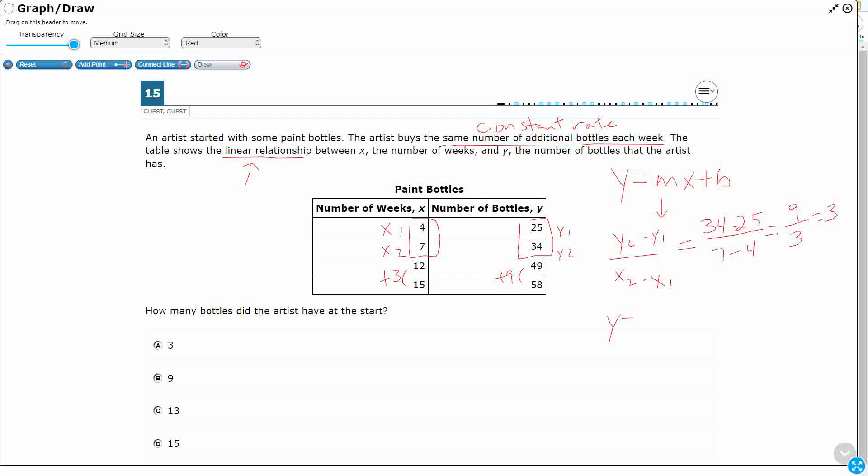So y equals 3x plus b. Now, to solve for the b, that's the starting point. Because maybe the artist didn't start at 0. Maybe the artist had some bottles to begin with. But we just pick any x and y and solve for it. So let's do this one. We haven't done 12 and 49 yet. So I'm going to make my y 49 equals 3. My x is 12. You could substitute any x and y if you want to. Plus b.